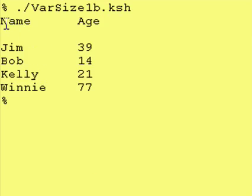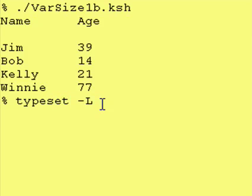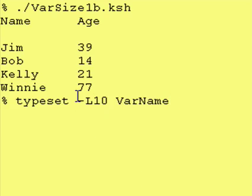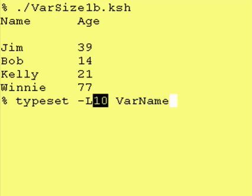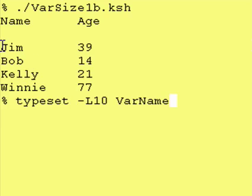So, once again, if you want to create formatted output, you simply use typeset -L, a number value, and then a variable name. That will guarantee that your variable is always going to be x characters wide — in this case, 10. It will always take input from the left-hand side and only take the first 10 characters. If you enter less, Cornshell will automatically pad the end of the contents of the variable so that it always comes out to be 10 characters wide.